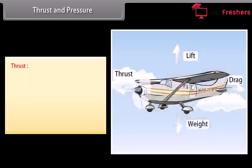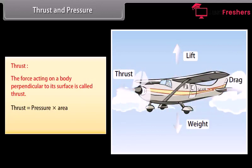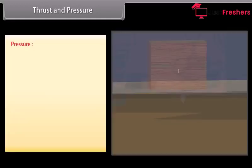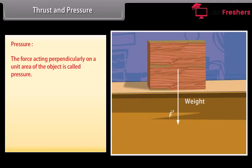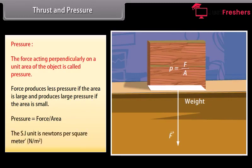Thrust and pressure: Thrust is the force acting on a body perpendicular to its surface. Thrust equals pressure times area, and its SI unit is Newton. Pressure is the force acting perpendicularly on a unit area of the object. Force produces less pressure if the area is large and produces large pressure if the area is small. Pressure equals force upon area, and the SI unit is Newtons per square meter.